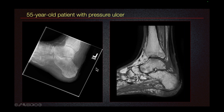I have another case of a 55-year-old patient with pressure ulcer on the heel. Here we can see skin irregularity corresponding to the pressure ulcer. There is subtle bone erosion here, which is a little bit difficult to see. Let's look at the MRI on the right — this is the T1 weighted image, and again this T1 hypointense marrow signal corresponds to osteomyelitis.